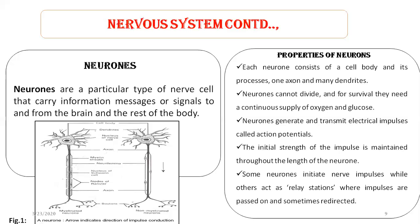Now the question is: why can neurons not divide? Neurons cannot divide because for a cell to divide it should undergo either mitosis or meiosis. As neurons are somatic cells, they should undergo mitosis. But for mitosis to occur, centrioles should move to the poles and develop spindle fibers that pull the chromosomes. Neurons lack centrioles and hence mitosis is not possible, so they cannot divide.